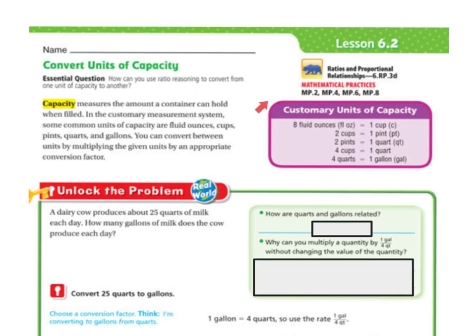This chart is going to be essential for doing your work today. 8 fluid ounces equals 1 cup, 2 cups equals 1 pint, 2 pints equals 1 quart, 4 cups equals 1 quart, and 4 quarts equals 1 gallon.